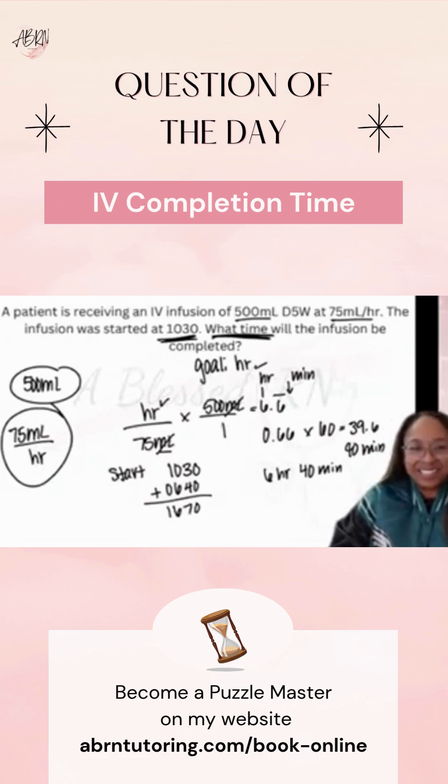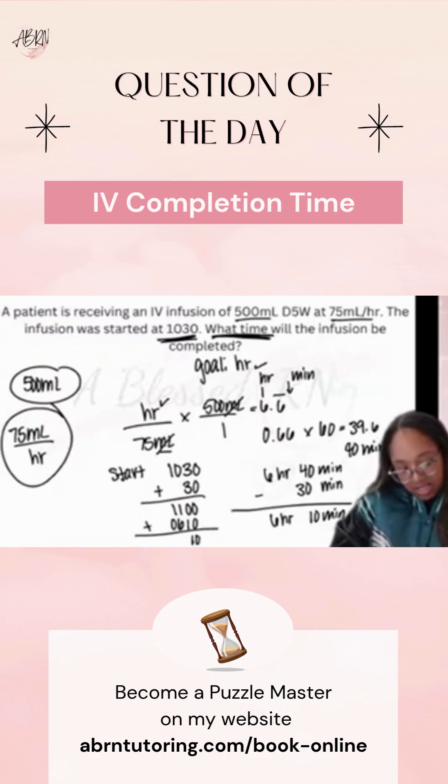When I have something like this that's 30 minutes or 40 minutes, I just borrow my time from my infusion time. To get to the next whole hour, which would be 11 o'clock, you add 30 minutes. So I'm going to take my 30 minutes from over here, so it'll still be 6 hours and 10 minutes. Now I can add my 6 hours and 10 minutes to 11 o'clock, so that'll be 17. My end time would be 17:10.